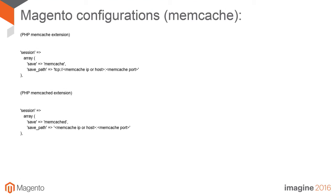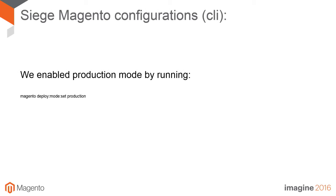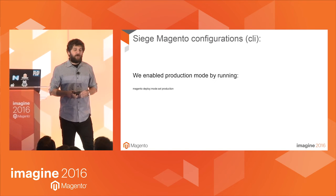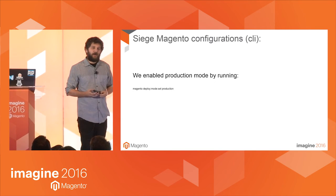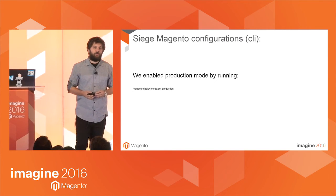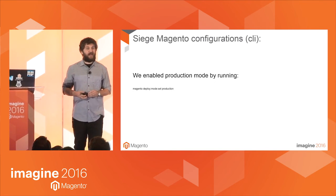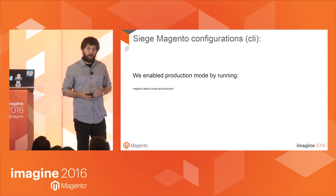This is what we use for Memcache. As you can see, there are two types of PHP extensions and both are supported. And finally, we enable production mode by running the following command. Production mode has better performance because the static files are populated into the pub/static directory and unlike developer mode, it compiles code.